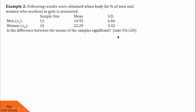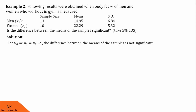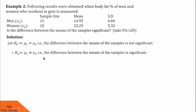We are asked to take 5% LOS. Let us proceed for the solution. First, we define H0 and HA. H0 states there is no significant difference between the means of samples, therefore mu1 equals mu2. HA states there is a significant difference between the means of samples, therefore mu1 is not equal to mu2. So this is a two-directional, that is two-tailed test.